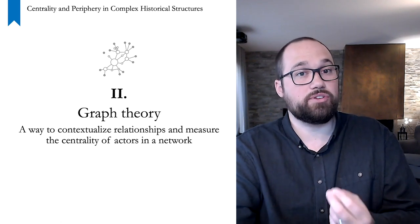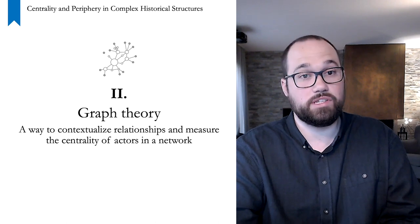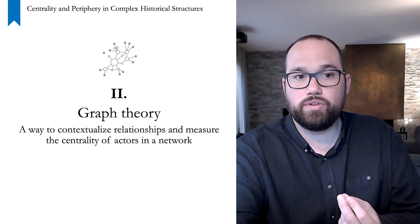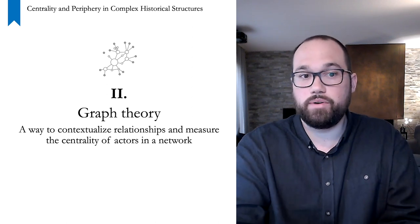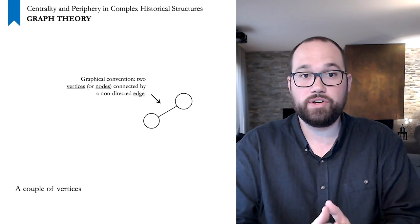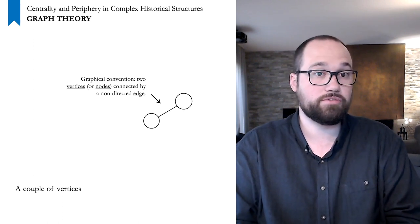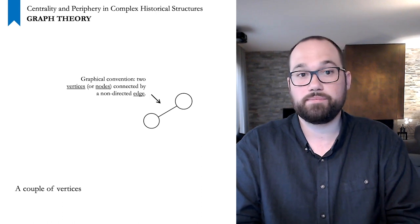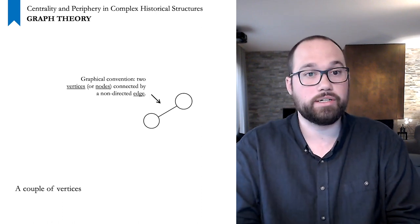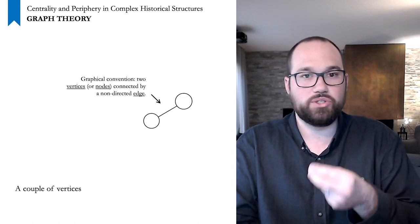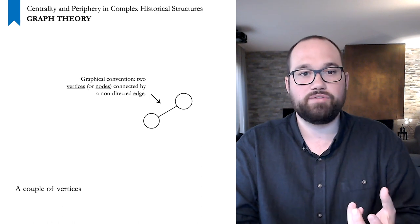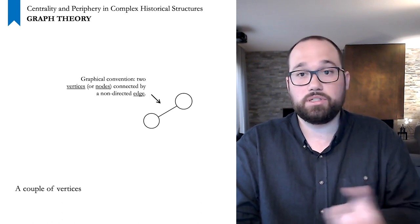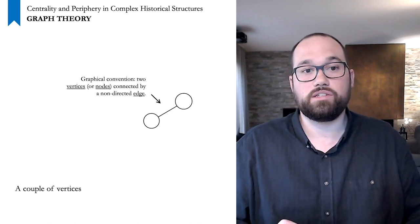This second chapter is devoted to graph theory and its capacity to help us discuss the centrality of actors in a network. We will start with a very simple example approaching how we graphically represent a graph. Here, two vertices connected by an edge represent an undirected relation between two elements; a directed relationship would be visualized with an arrow marker. This kind of graph can represent a network of people, organizations, places, or objects. For this demonstration, imagine it is about two people writing letters to each other — for example, Albert Einstein and Marie Curie.